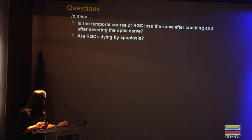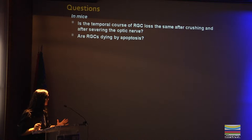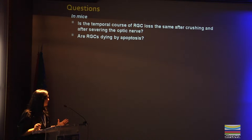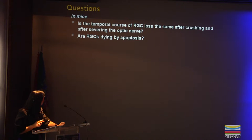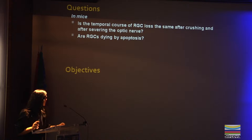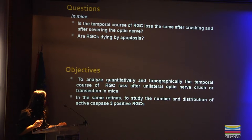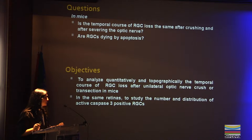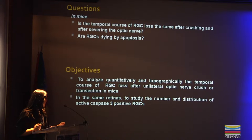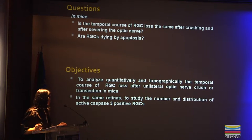With this in mind, is the temporal course of ganglion cell loss the same after crushing and after severing the optic nerve? And are ganglion cells dying by apoptosis? To answer this question, we set the following objectives: to analyze quantitatively and topographically the temporal course of ganglion cell loss after unilateral optic nerve crush or transection in mice, and to study the number and distribution of apoptotic caspase-3 positive ganglion cells.